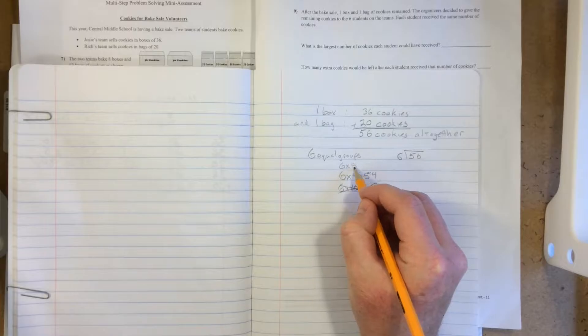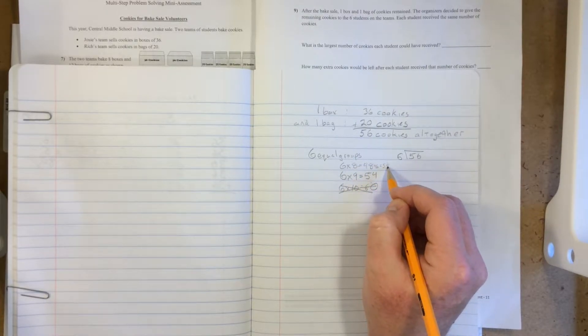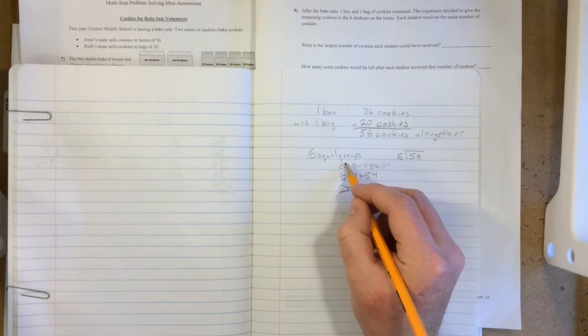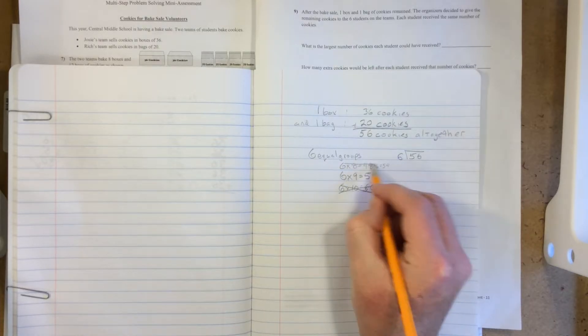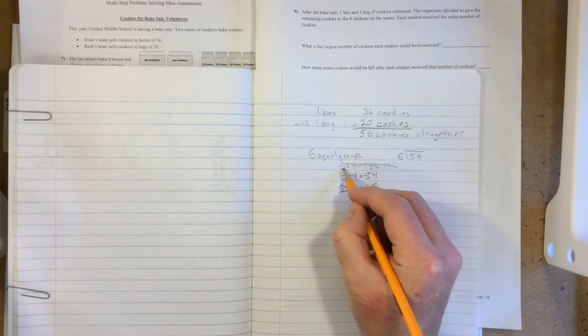And if we did 6 times 8, that's 48, and there's another 6 before you even get to 56. If we answered 8 remainder 2, you may have just used an incorrect multiplication fact. 6 times 9 is 54. 6 times 8 is actually 48, and it wouldn't give a remainder of 2.